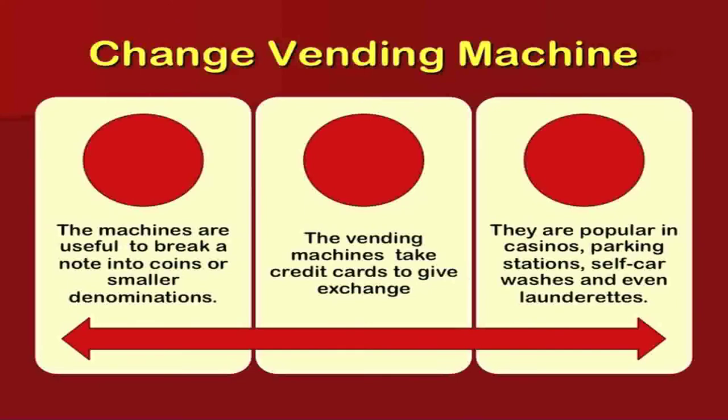Change vending machines of the modern era are useful for breaking a note into coins or smaller denominations. These machines take credit cards to give exchange and are popular in casinos, parking stations, self-car washes, and laundries. If you have a large note and cannot do shopping, the vending machine gives you coins and smaller denomination money. They are available at parking spots, car service stations, hotels, and any location with high customer footfall.